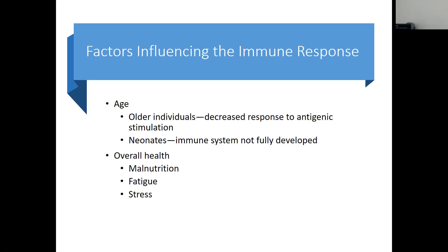Neonates are the same — babies' immune systems are not fully developed. That's where we get the concept of mother's antibodies crossing the placenta to help the baby survive until its immune system revs up. If you have children, you notice they're never sick the first six months because they essentially had your antibodies protecting them. Then from six months to a year and a half they're sick every day because they have to start experiencing their own antigens and produce their own antibodies.